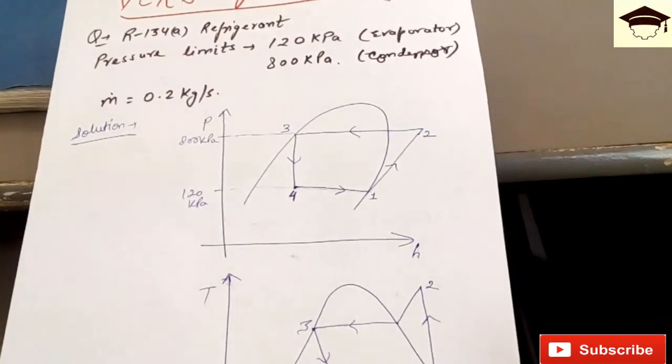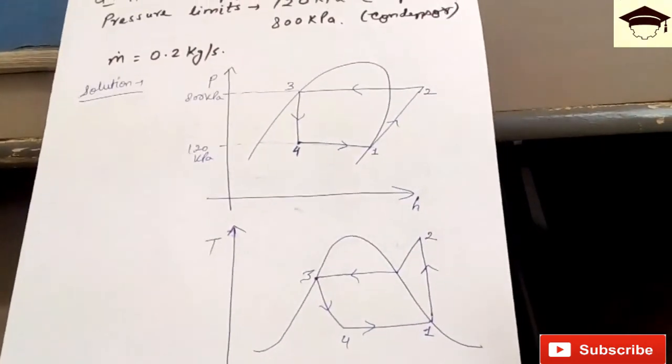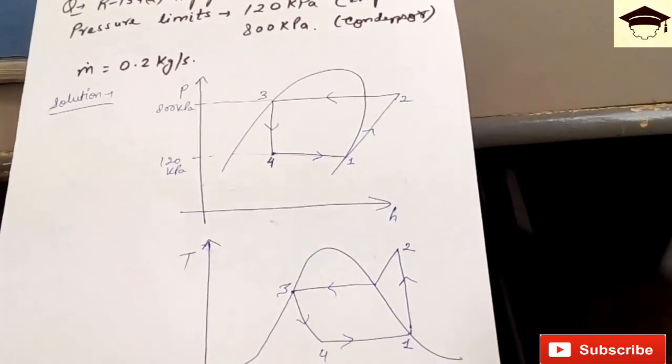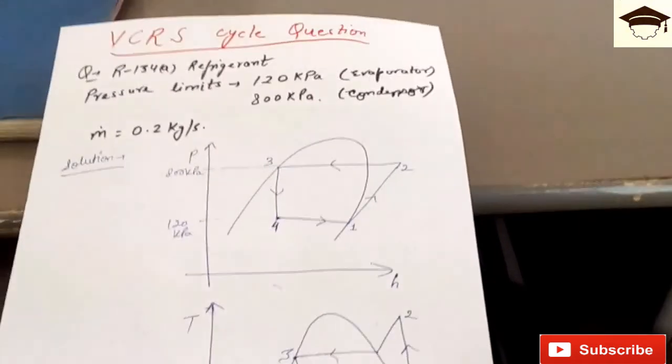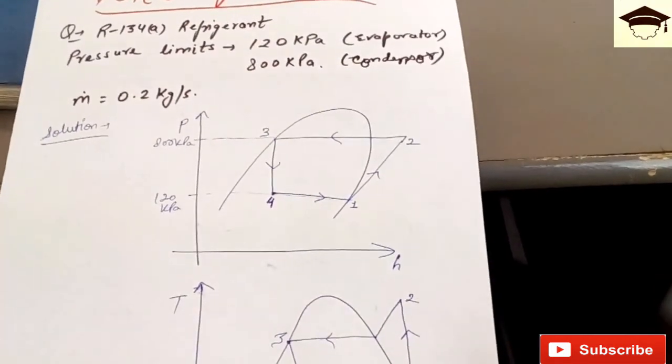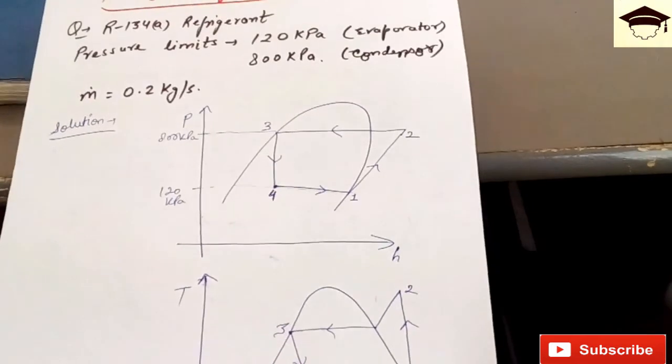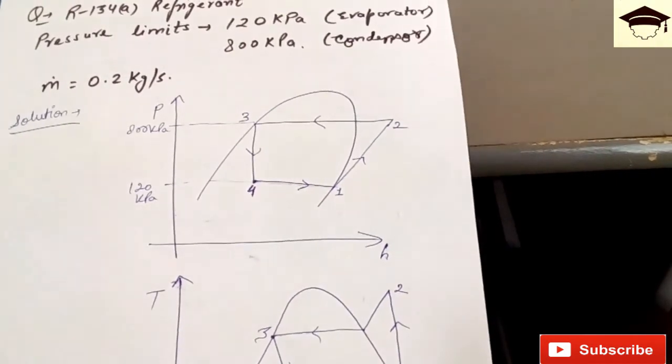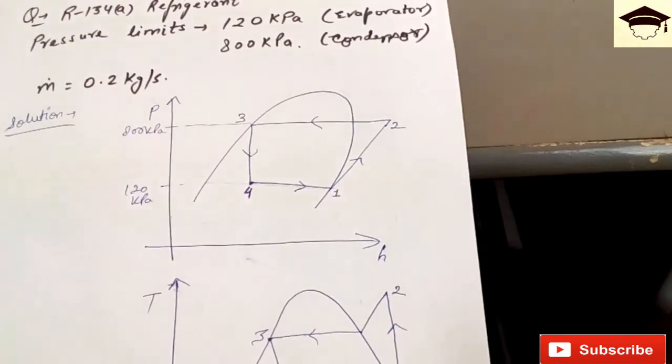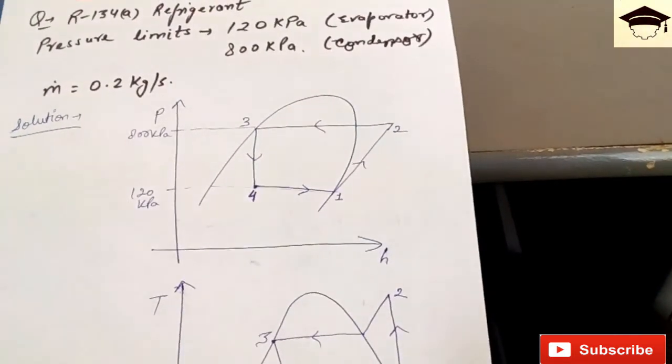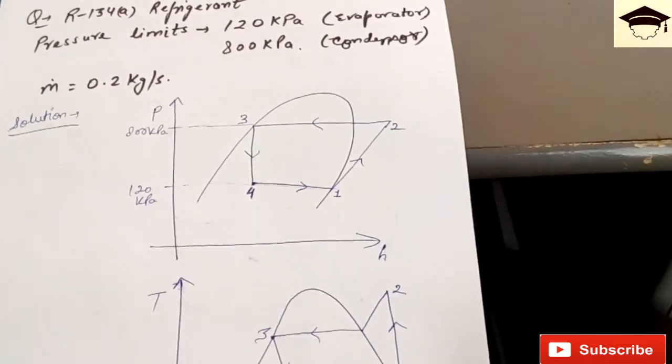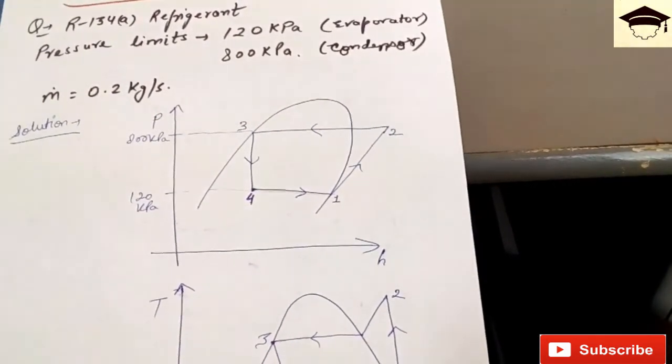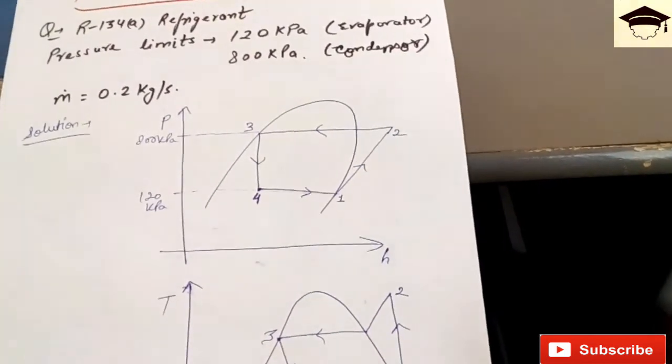Now what you have to do: take the pH chart of ammonia, then make a horizontal line passing from 120 kilopascal and one horizontal line passing from 800 kilopascal. Wherever that line intersects the topmost slant curve, that will be point 3. You draw a perpendicular from that point and wherever it cuts the line passing from 120 kilopascal, that will be point 4. Similarly, point 1 can be located by extending the 120 kilopascal line, and wherever it cuts the slant curve on the right-hand side, that will be point 1.